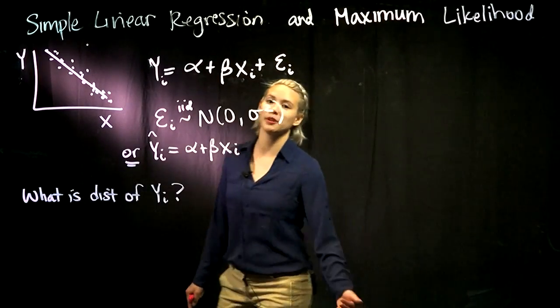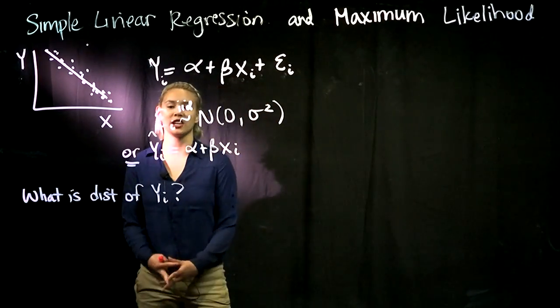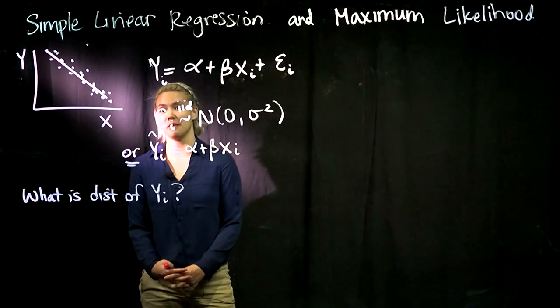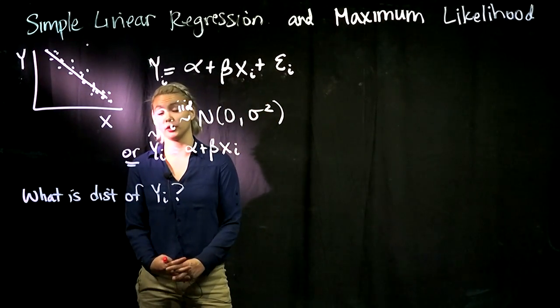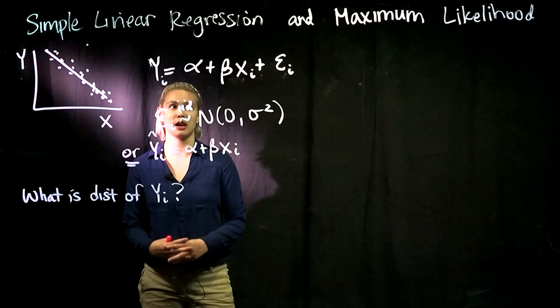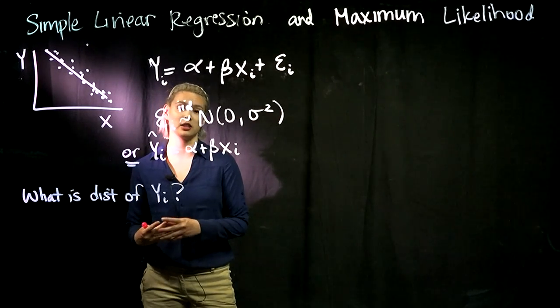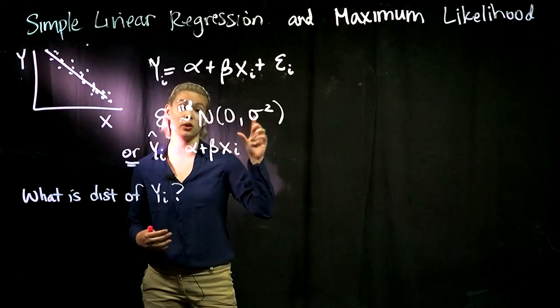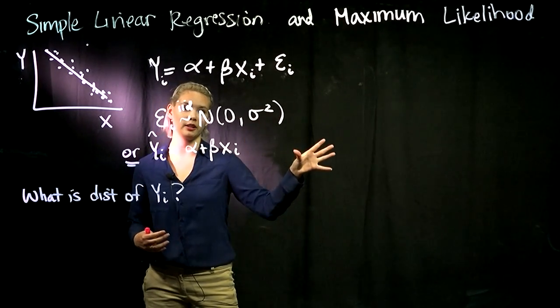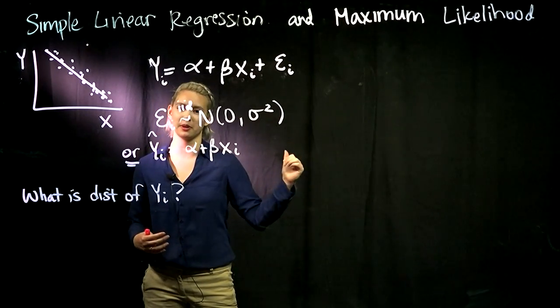In a previous video, we talked about simple linear regression and the method of least squares. Now we're going to tie least squares into maximum likelihood, which we learned about in previous videos.